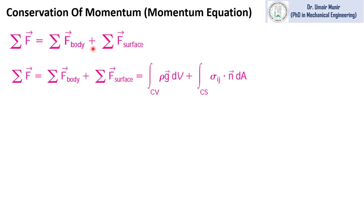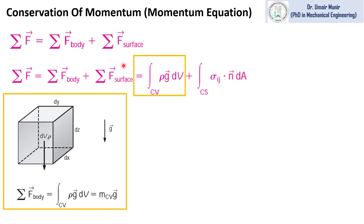Next we need to understand what are the forces acting on a control volume. One is the body force and the second is the surface force. We can evaluate the body force — body force is due to the weight of the body. Consider a differential volume in the system; its weight is equal to m times g. If we replace the mass with rho delta-v and integrate it for the whole control volume, we will get the body force.